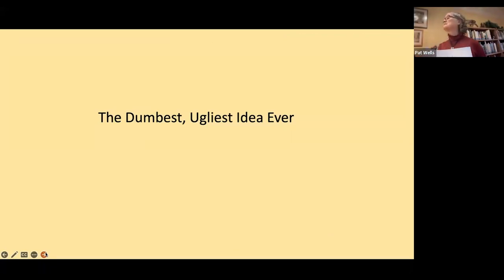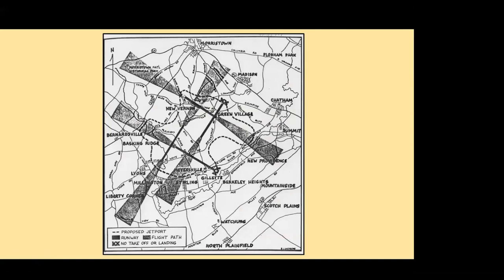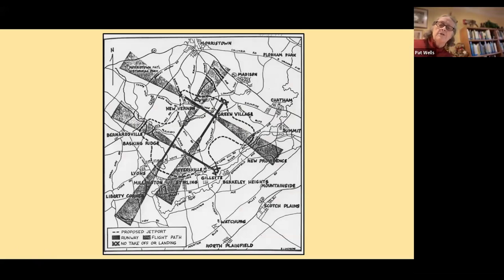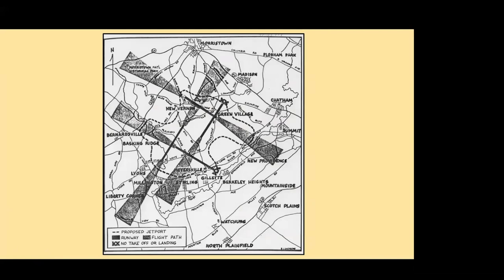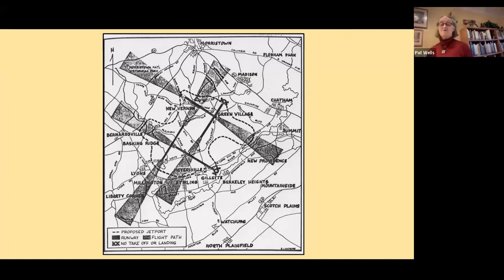Now, the dumbest, ugliest idea ever — the jetport. Looking at the map, the heavy dotted line shows where the airport was supposed to go, the heavy straight lines are the runways, and the black cones are the landing and takeoff patterns. New Vernon, Bernersville, and Myersville are all visible within the proposed footprint. In December 1959, a representative of the Port Authority of New York contacted the Newark Evening News about a plan to build a jetport in the Great Swamp, making clear the paper was expected to make it look like a good idea. The editor wasn't sure it was a good idea, but knew a good story — he plastered it across the front page above the fold.